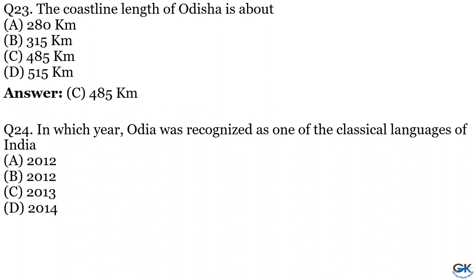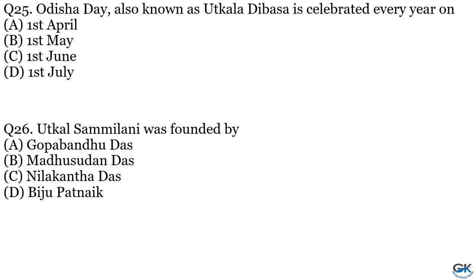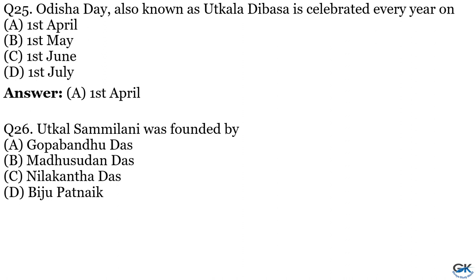Question No. 24: In which year was Odia recognized as one of the classical languages of India? Option A: 2012. Option B: 2012. Option C: 2013. Option D: 2014. The answer is Option D, 2014. Question No. 25: Odisha Day, also known as Utkala Dibasa, is celebrated every year on which date? Option A: 1st April. Option B: 1st May. Option C: 1st June. Option D: 1st July. The answer is Option A, 1st April.